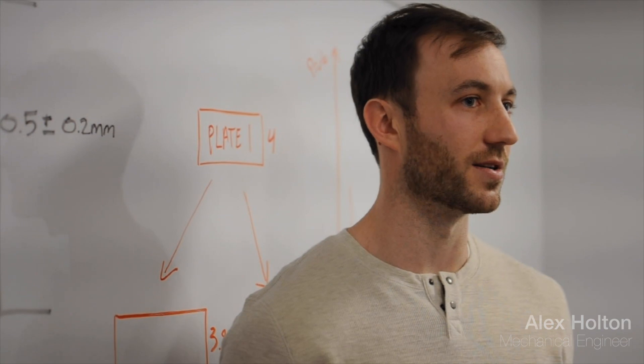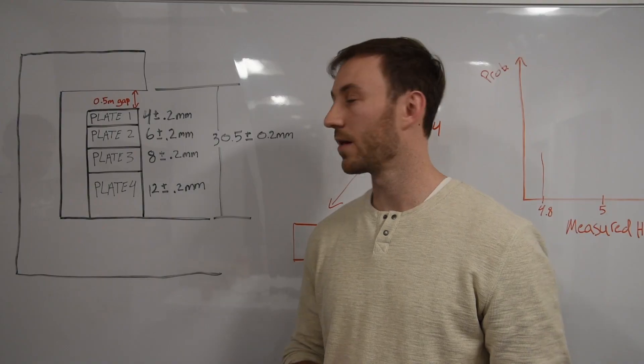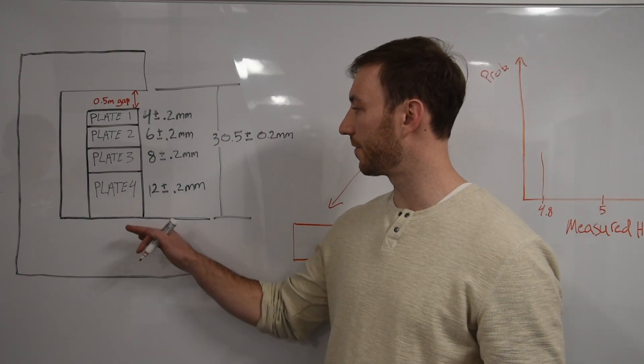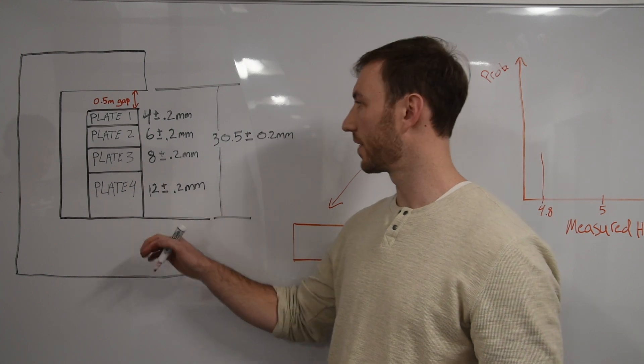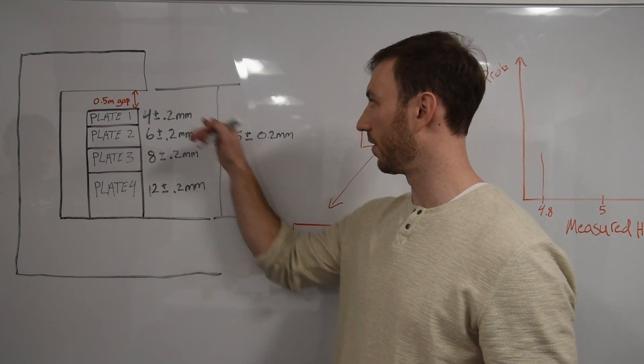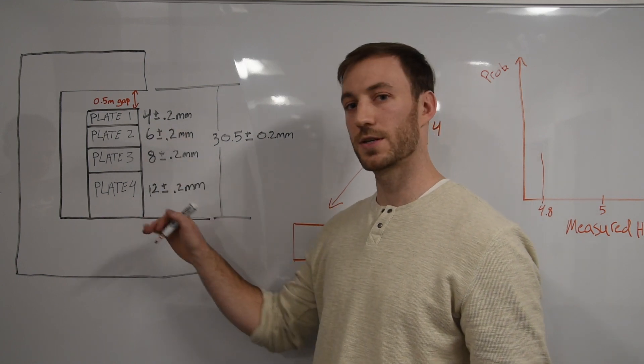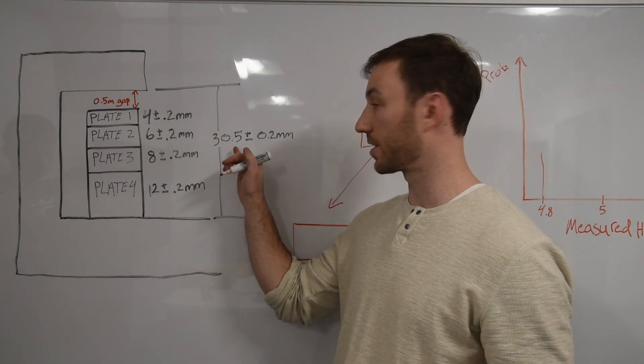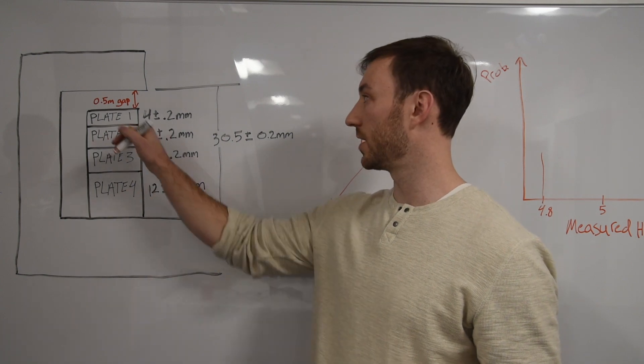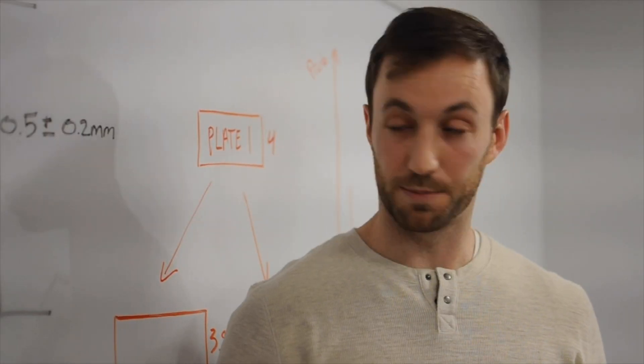The easiest way to grasp this concept is by diving into an example. For instance, let's say we have a four-plate stack that we're trying to fit within a set height ceiling here, and the total height of the plates is 30 millimeters, the total height of the ceiling is 30.5 millimeters, and this leaves a half millimeter gap between the plates and the ceiling.